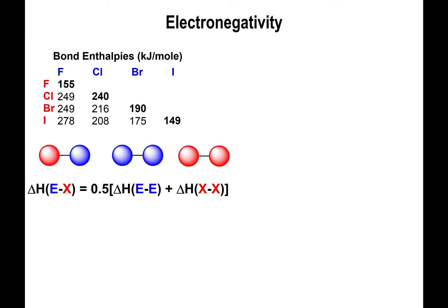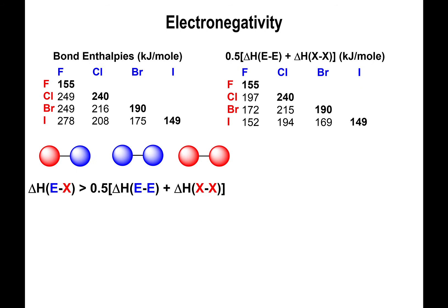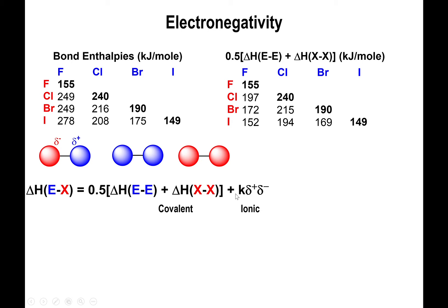We derived an equation for the bond dissociation enthalpy of the heteroatomic diatomic molecule in comparison to the homonuclear diatomic molecules. We associated the discrepancy in the average enthalpy energies of the homonuclear versus heteronuclear molecules to an ionic contribution, arising because one atom attracts electrons more efficiently. That atom develops a delta minus charge, while the less electronegative atom develops a delta plus, creating an ionic contribution associated with electronegativity.